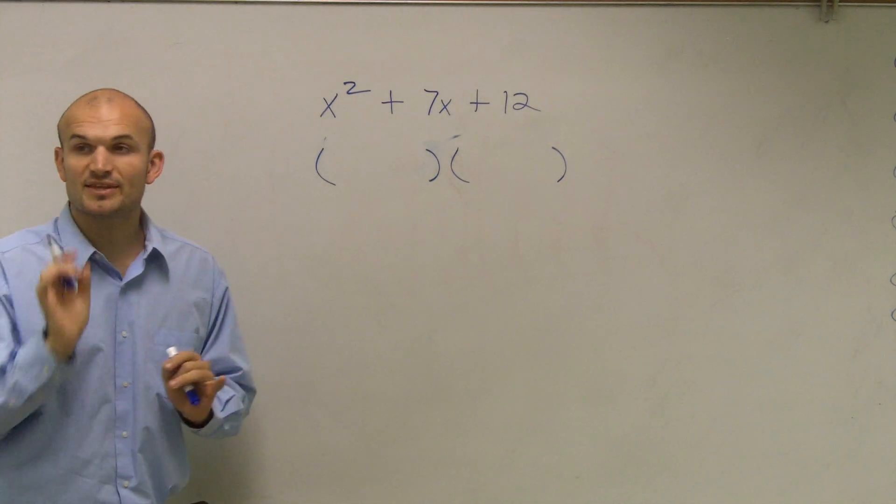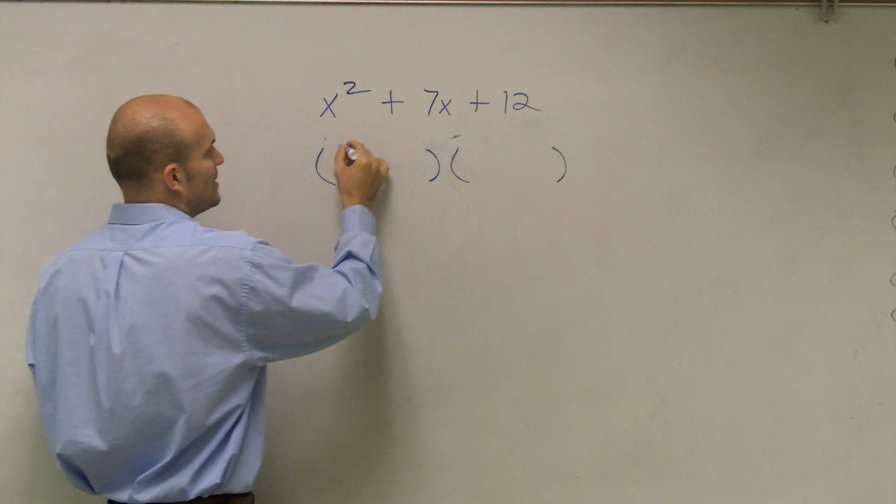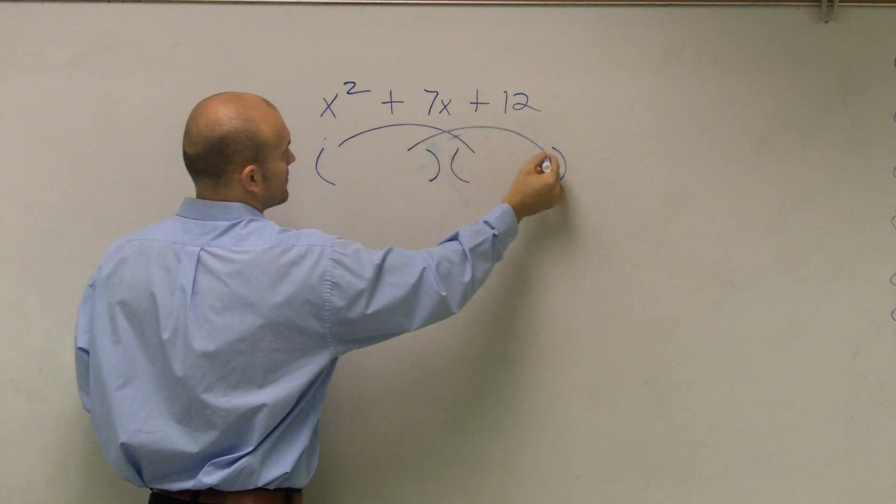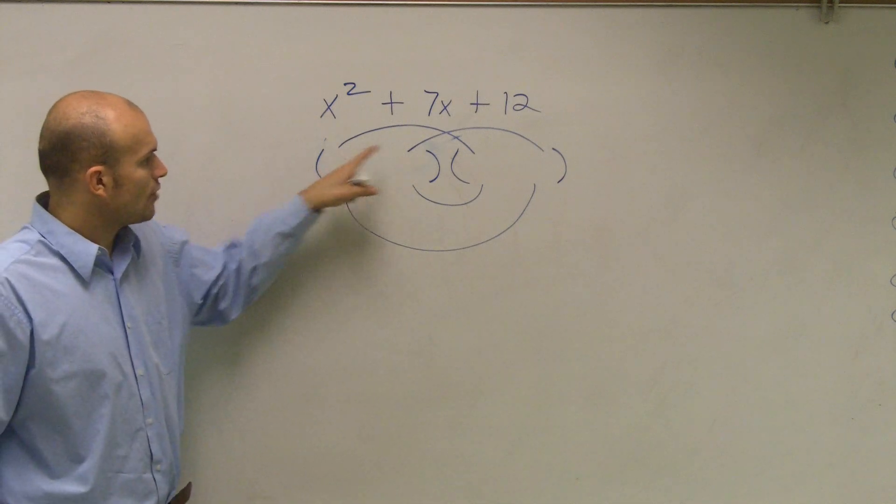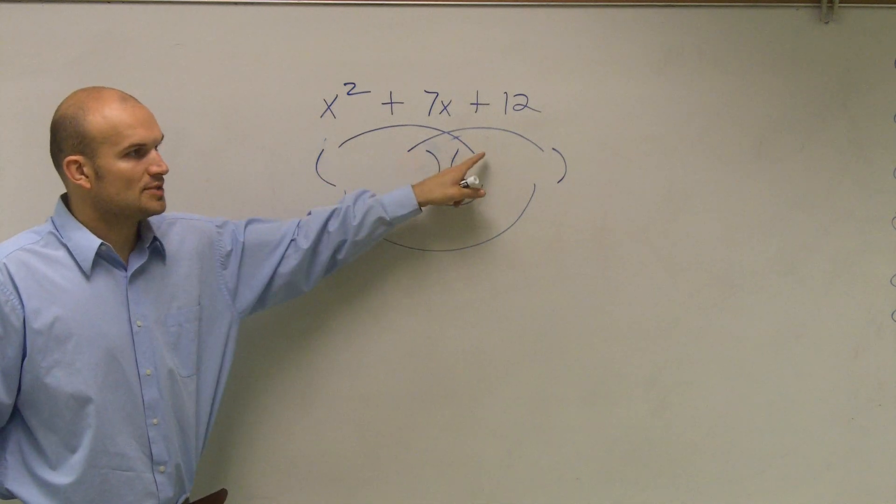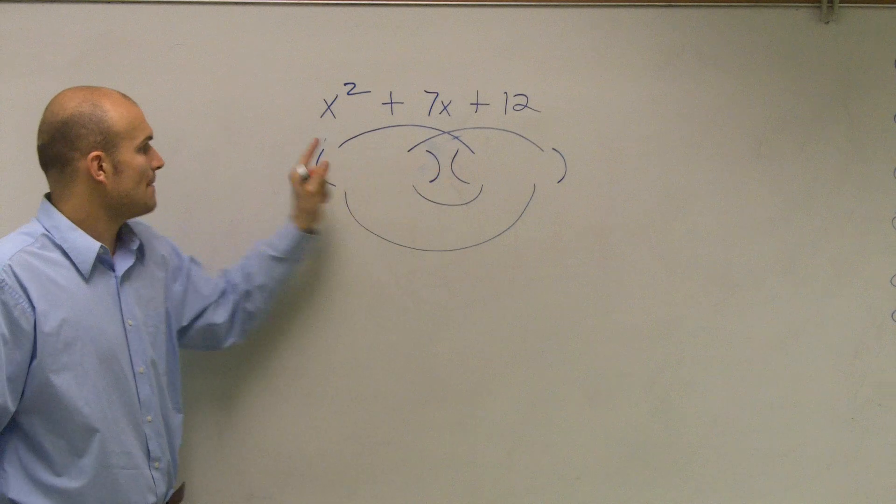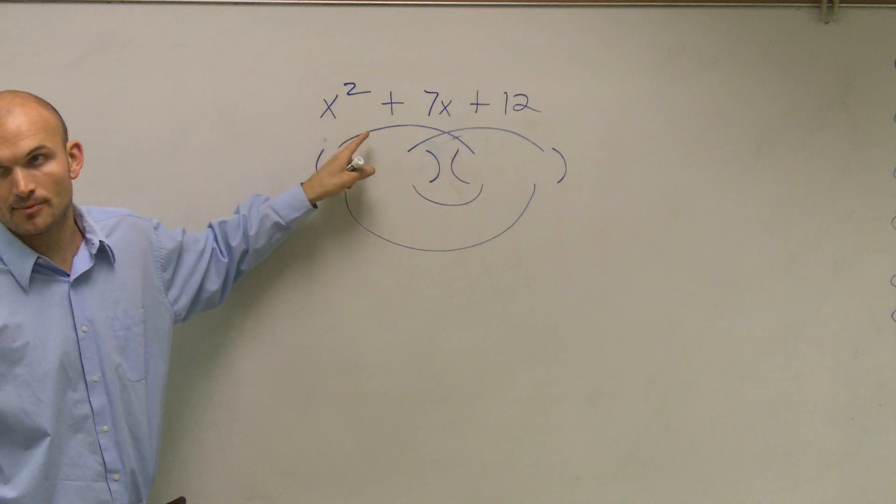Now, there's a couple things we need to remember. Remember when we did the FOIL phase, we multiplied our first two numbers. When multiplying our first two numbers, that provided us with this first term.